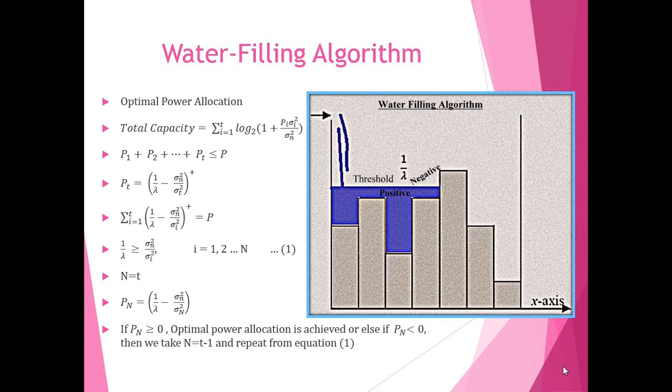Another important point to consider in the system is power allocation in a channel. The total channel capacity is given by summation from i = 1 to T, log₂(1 + pi × σi² / σn²), where σn is the noise power, σi is the singular value of the ith channel in the channel matrix, and pi is the power of the ith channel in the channel matrix.